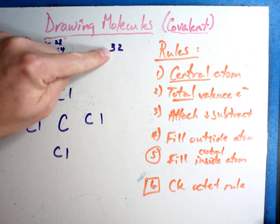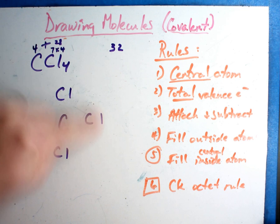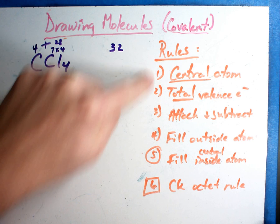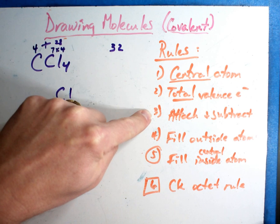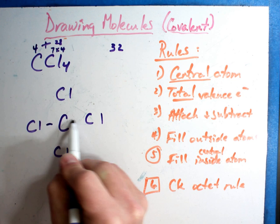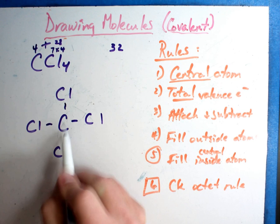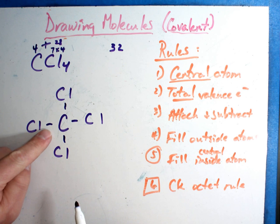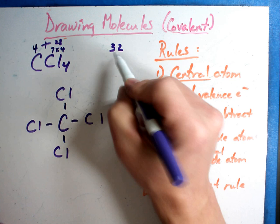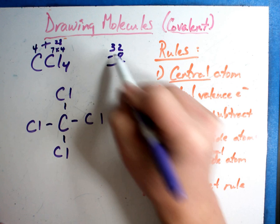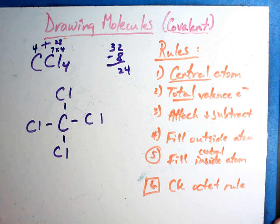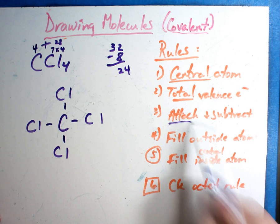Rule number two: total valence electrons. Take all valence electrons and add them together. Carbon has four valence electrons. Chlorine has seven valence electrons, and there are four of them, so seven times four is twenty-eight. Twenty-eight plus four is thirty-two. Thirty-two is the magic number for this molecule - that's how many electrons make everybody work out to be full. Rule three says attach and subtract. Each line is two electrons, so attaching the four chlorines used two, four, six, eight electrons. Thirty-two minus eight is twenty-four electrons remaining.